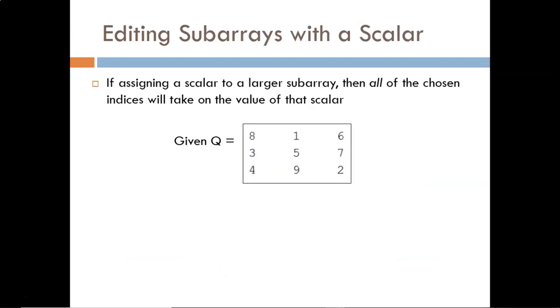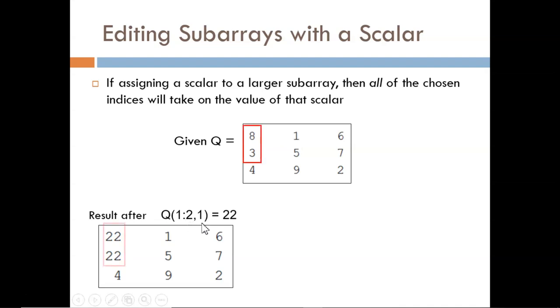We can also change more than one value at a time. Here, we will see what happens when we assign a scalar to a subarray that spans more than one index. Starting with the same original matrix Q, we then enter the command shown here. Our first step is to identify the scope of the subarray. In this case, it is rows 1 and 2 in the first column. Then we replace all the values in these slots with the assigned scalar 22.